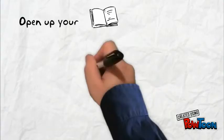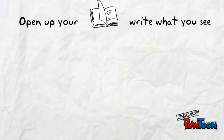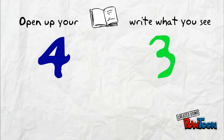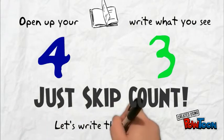Open up your books, write what you see. First write the four and then the three. Just skip count and write them all down.